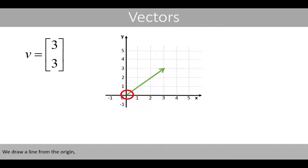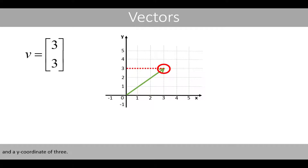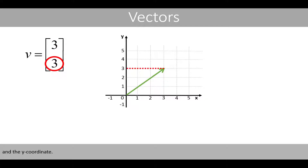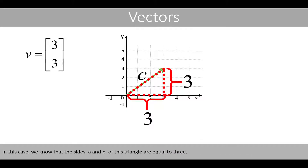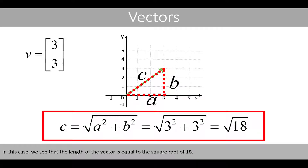We draw a line from the origin to the point in space with an x-coordinate of 3 and a y-coordinate of 3. The elements of this vector can therefore represent the x-coordinate and the y-coordinate. The length or magnitude of this vector can be calculated by Pythagoras' theorem if we imagine a triangle like this. In this case we know that the sides a and b of this triangle are equal to 3, and the length of the vector is equal to the square root of 18.